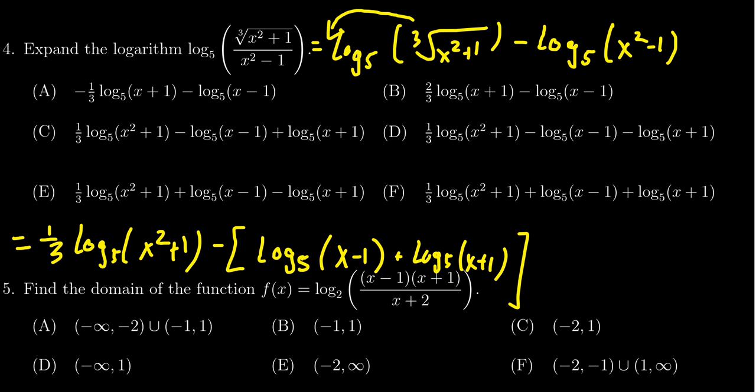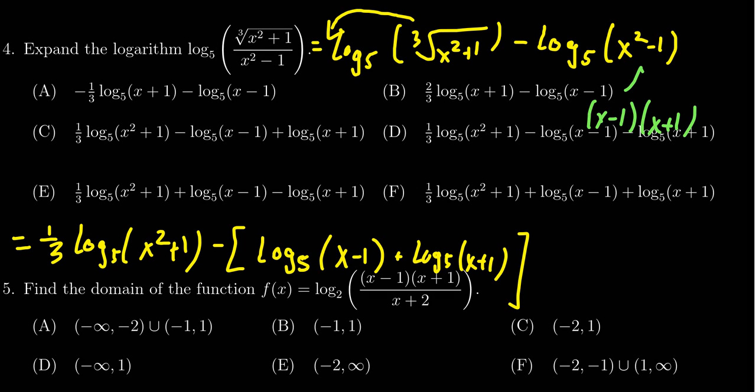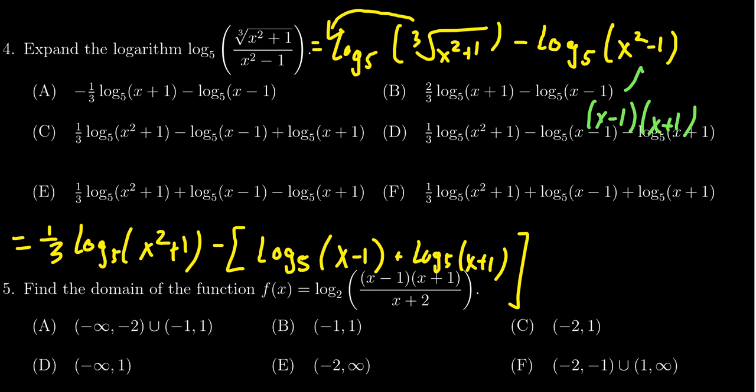So I'm utilizing the fact here that x squared minus one, it factors as x minus one and x plus one. That's what we're using here. Now, we broke apart the product, but there was this negative sign in front of them. We have to distribute this onto both pieces.